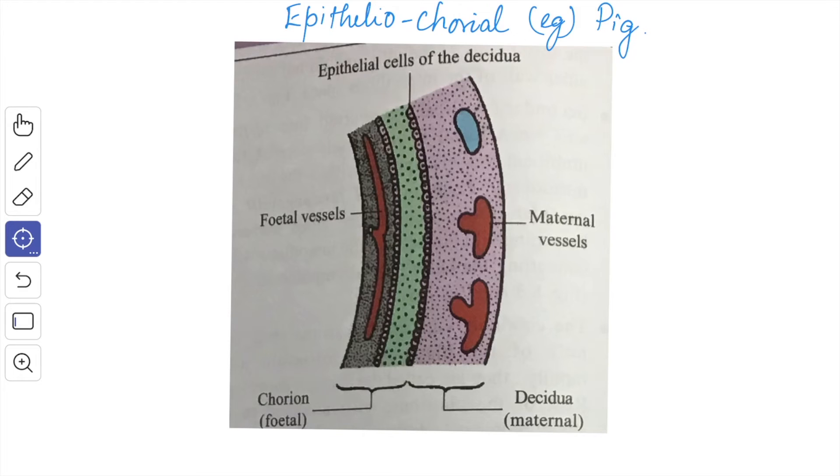According to the tissues forming the placental barrier, the placenta may be classified phylogenetically as the epithelial chorial, which is found in the pig. Here, the endometrial epithelium remain intact and the fetal and the maternal tissue come in direct contact only. No part of the decidua is shed at the full term.